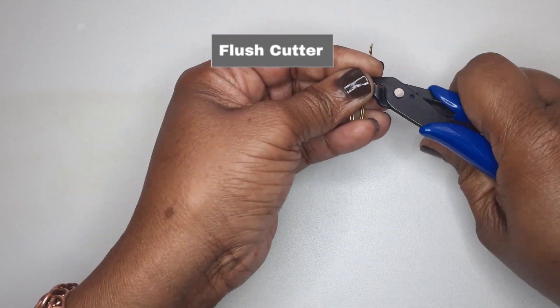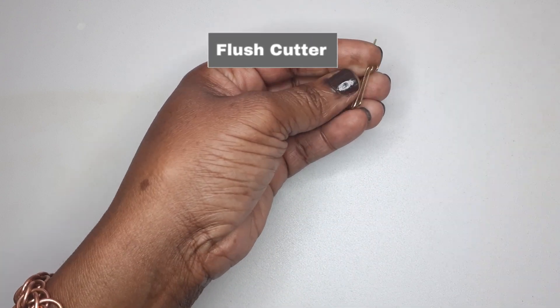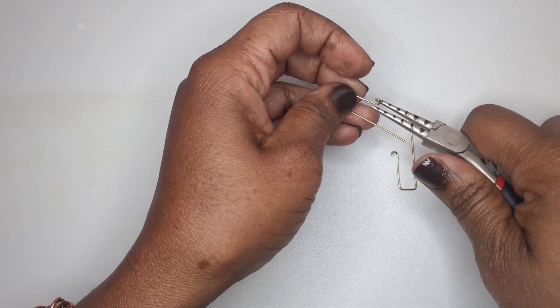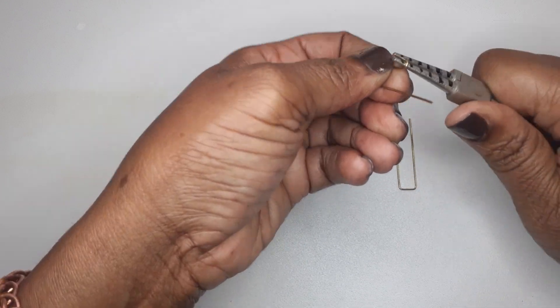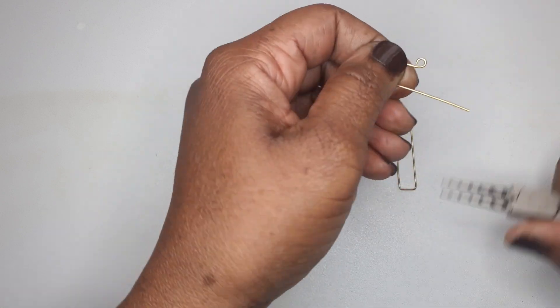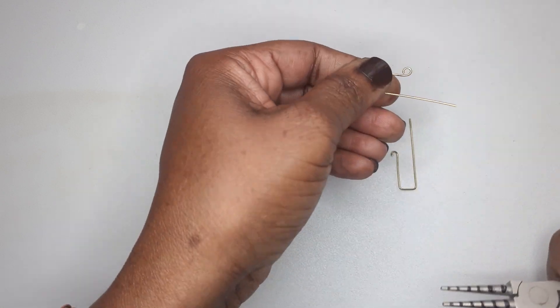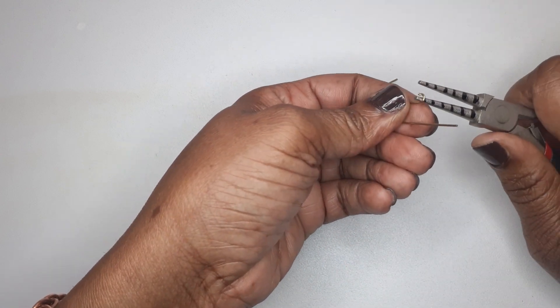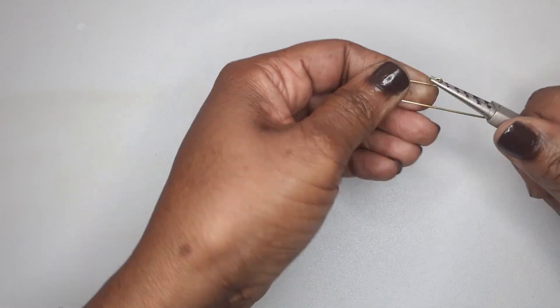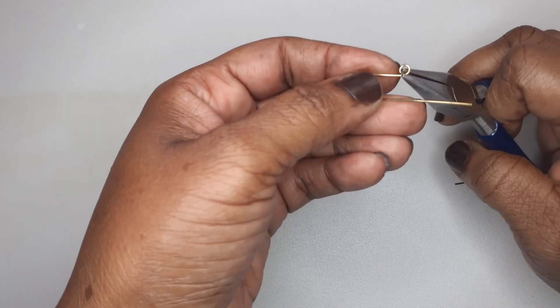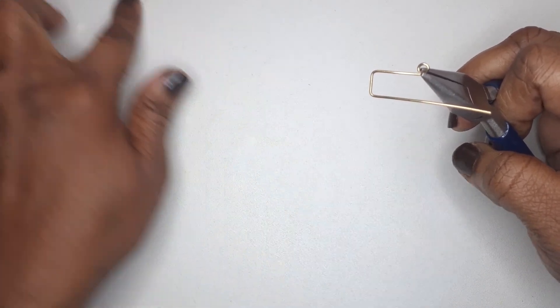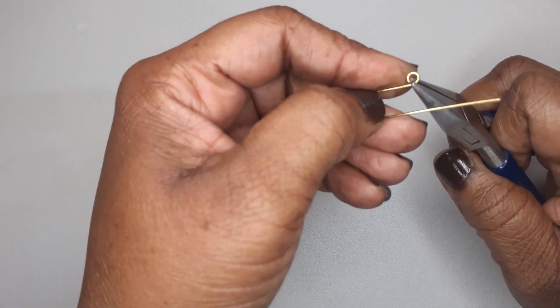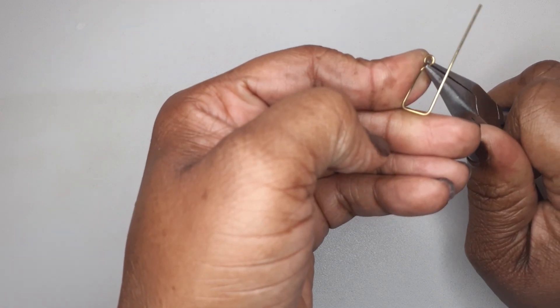Afterward, I use the flush cutter to separate. I place the chain-nose plier into the loop, and I slightly twist my hand towards me to bend it.